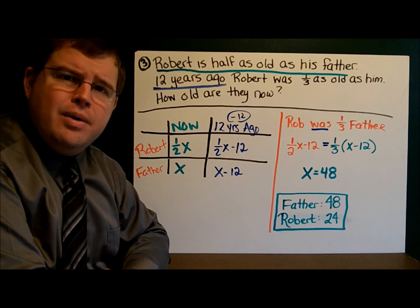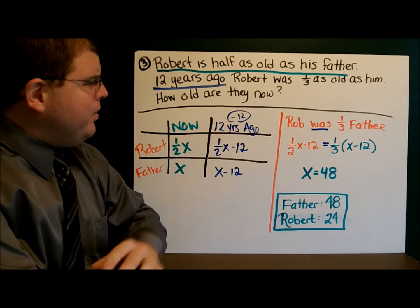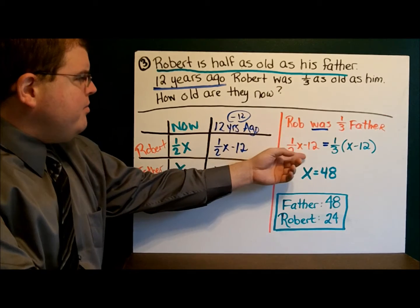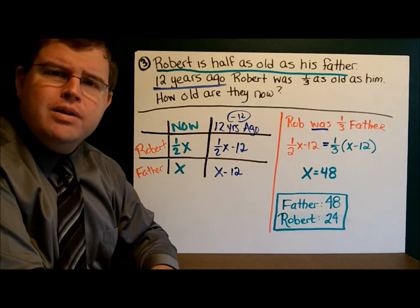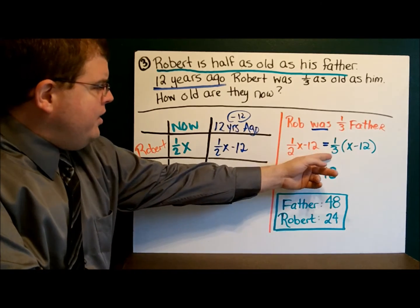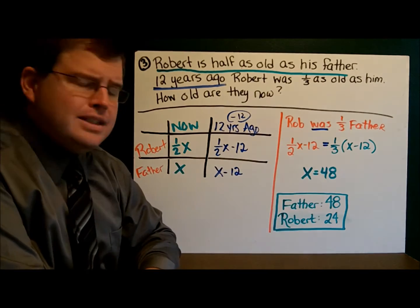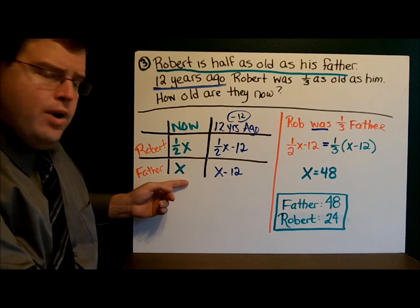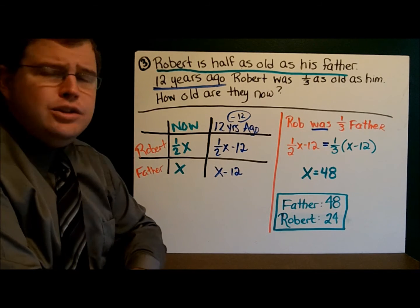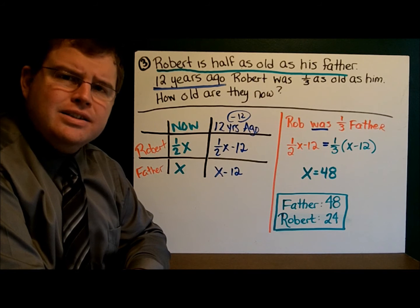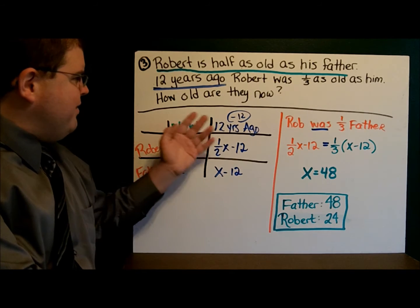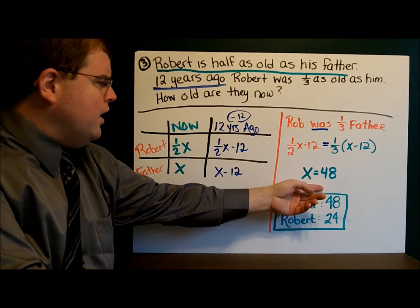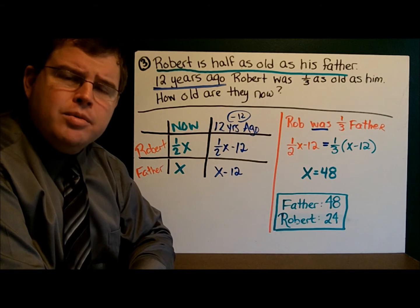Now we write the equation: Robert was one-third of his father's age. So one-half X minus twelve equals one-third of X minus twelve. We solved the equation and got X equals 48. That means dad is 48 and Robert is 24 — half of that. Make sure you have your table completed, your statement written out, your equation written and solved, and then your final conclusion.